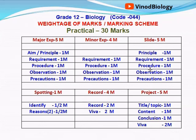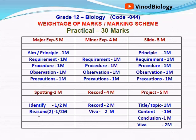For slides, how you observe under the microscope is part of observation marks. Whether you obtained DNA or not and why is written in the observation section. For spottings, it is one mark each — half mark for correctly identifying and half mark for giving reasons, with at least two minimum reasons required.